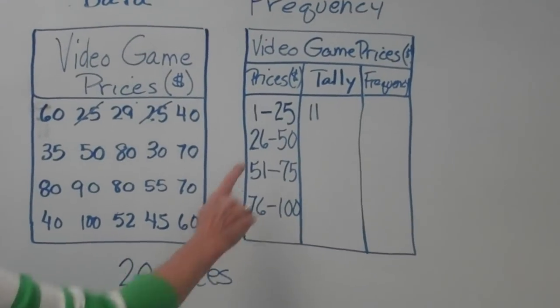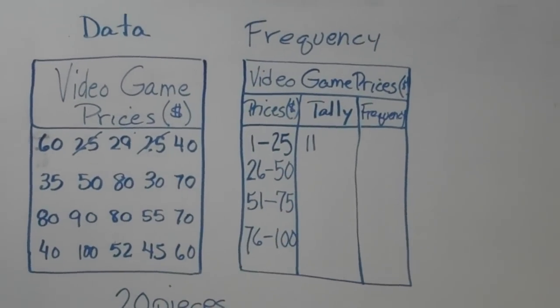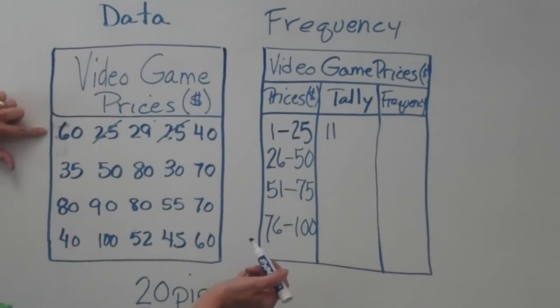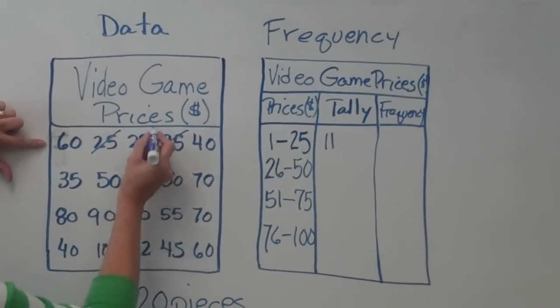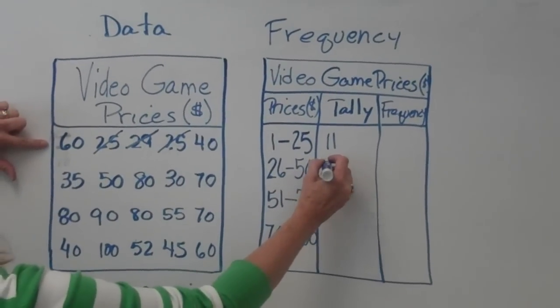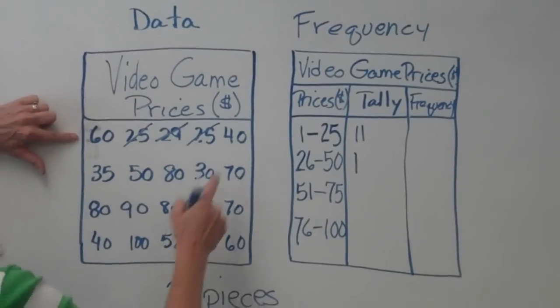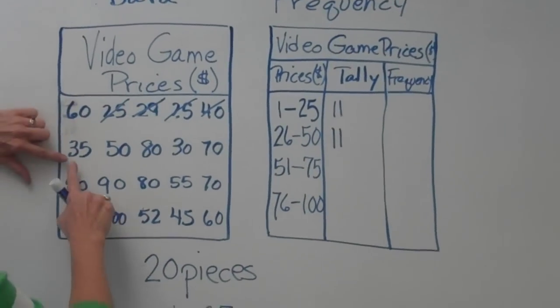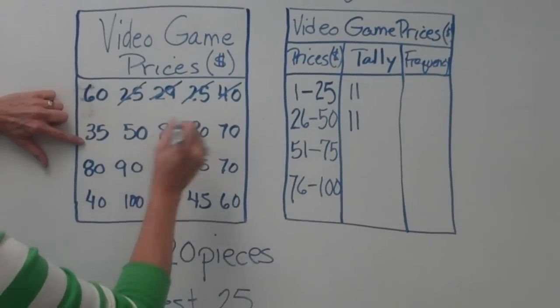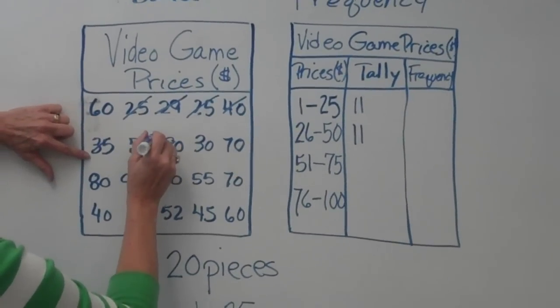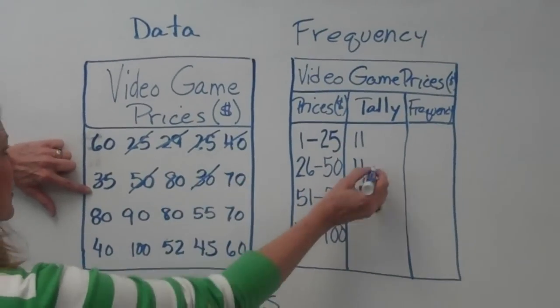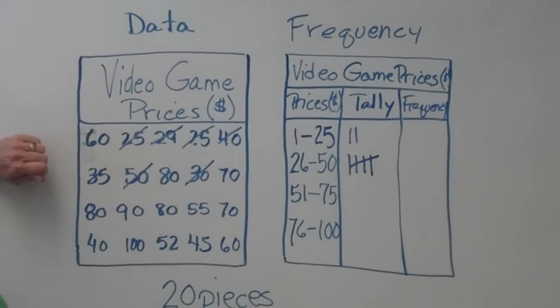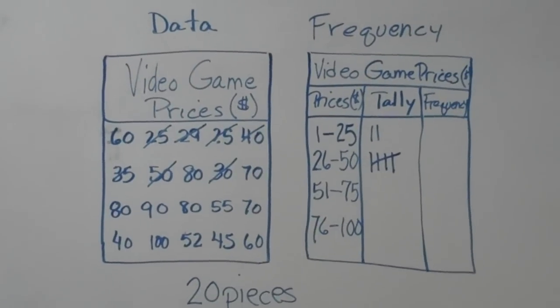The next interval is 26 dollars to 50 dollars. Let's take a look in the same manner we did in the first. 29 will fit in that interval. Mark it there as a tally mark. 40 fits in that interval. Down to the next row, 35, one, two, three. So we'll add three more tally marks, one, two, three. Notice the fifth tally mark, I'll put the traditional slash.